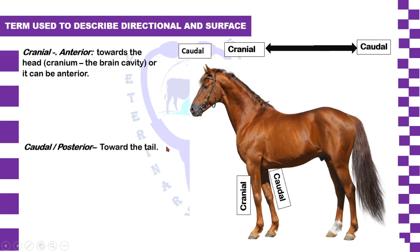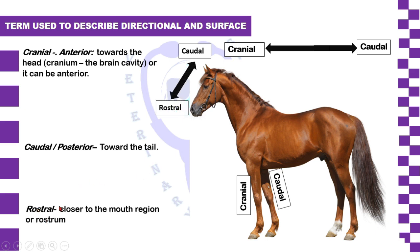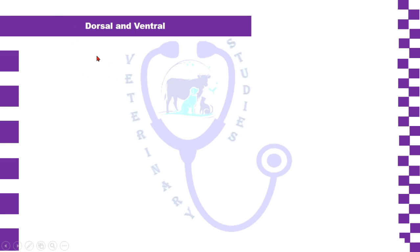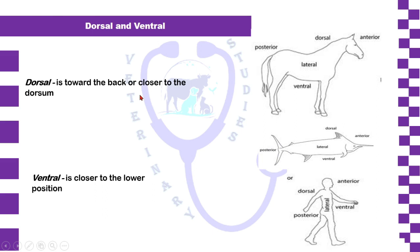Caudal — 'cauda' means the terminal part of the vertebral column, meaning tail. It represents toward the posterior part of the animal or tail. The border, angle, or surface of any anatomical structure facing toward the tail is called caudal surface, caudal border, or caudal angle. The third term is rostral — 'rosta' means beak, nose, or mouth — so it represents toward the mouth or nose region.